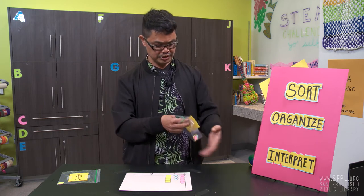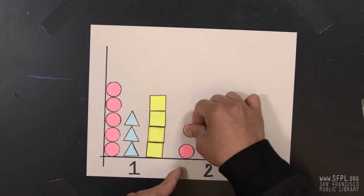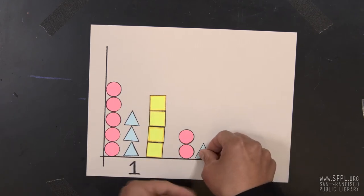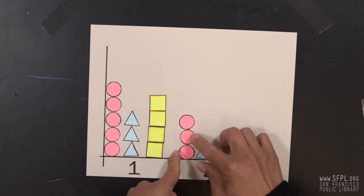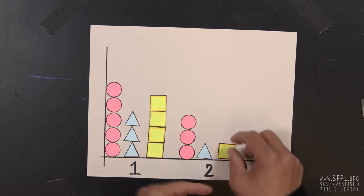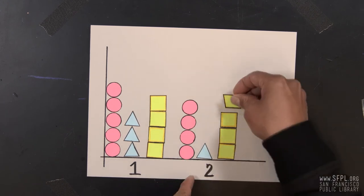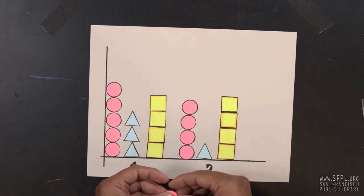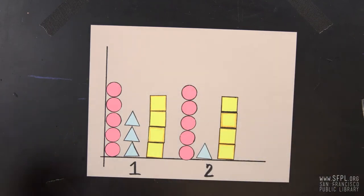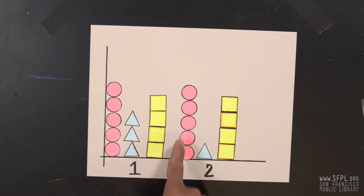Again we'll follow the steps: sort them, organize them in straight lines by shapes, and make sure they're lined up. Let's ask the same question. On bag number two, which shape has the most amount? The longest line tells us that circle has the most amount. Which is the least amount? Triangle is the least amount.